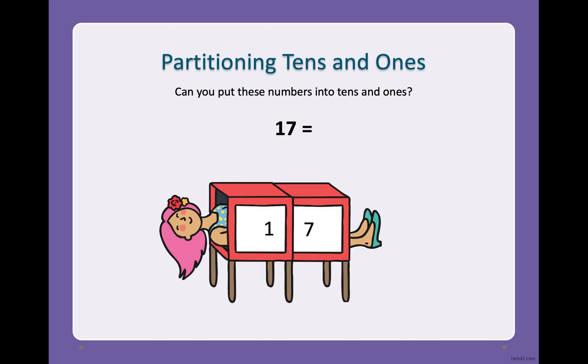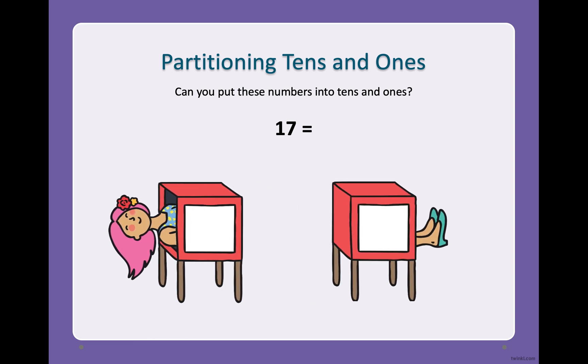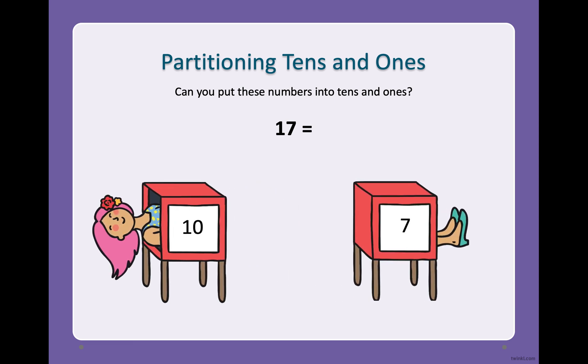Now let's try another one. We have the number 17. Okay let's say abracadabra, separate the lady. Okay which makes ten and seven, which is one group of ten and seven ones.